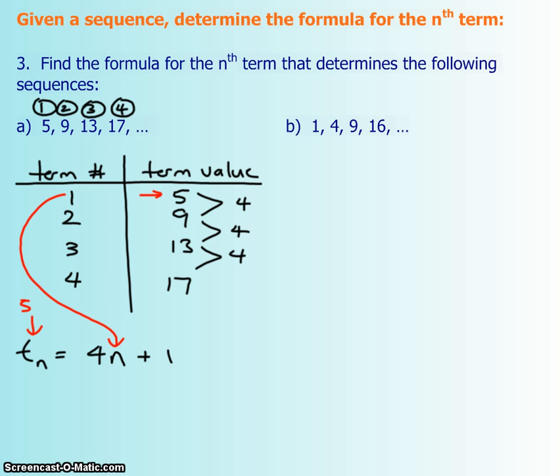So what we're going to do is we're just going to try it again with a different set of numbers and see if it works. If I take 4 and I sub it in here, will I get 17? Well, 4 times 4 plus 1 does give you 17. So this is the correct formula.